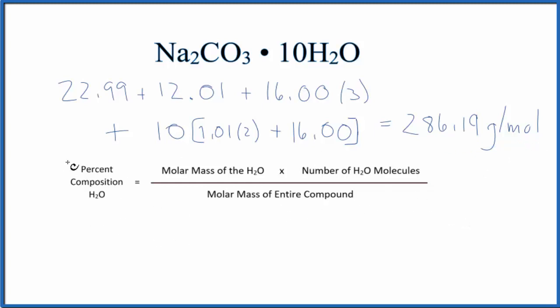So in our equation, to get the percent composition of water in this Na2CO3·10H2O, we would take the molar mass of water, which is 18.02 grams per mole, multiply that by the number of water molecules. We have 10 separate water molecules around the sodium carbonate. So multiply that by 10 and divide the whole thing by the molar mass of the entire compound.